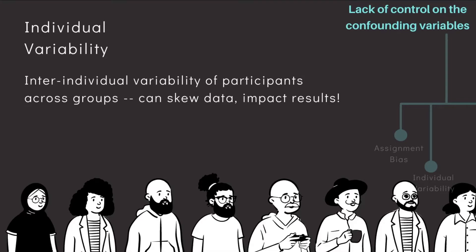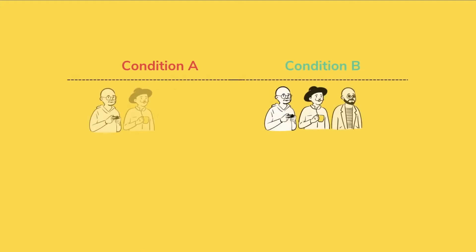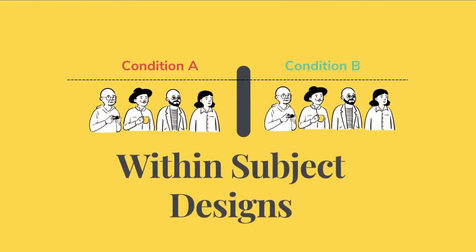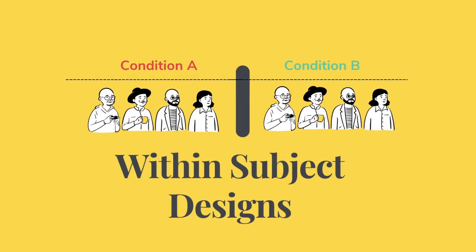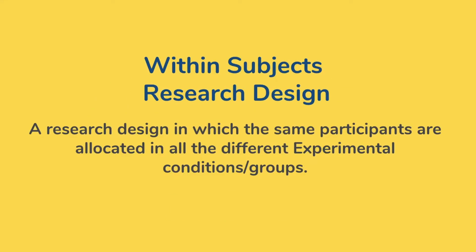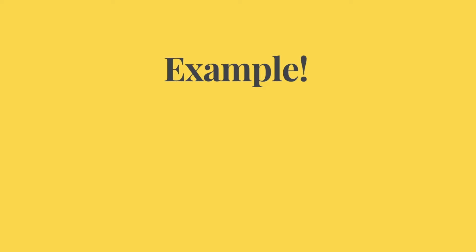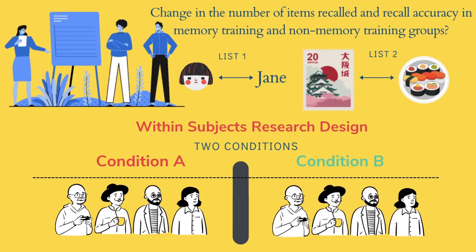Let's now move on to the next topic: the within-subjects design. The within-subjects design is a research design in which we allocate the same participants across the various experimental conditions or groups. Let's look at the same example of the memory recall study. Unlike the between-subjects design, we can make the same study a within-subjects design by simply allocating the same participants across both the memory training and the non-memory training group.